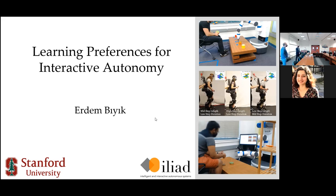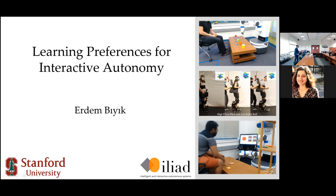He got his BS from the camp university in 2017, his MS from Stanford in 2019, and he's active with the faculty PhD study today. He will be talking on interactive autonomy for making robots learn interaction capability. Thank you for the kind introduction. I'm a fifth-year PhD student and today I'm going to talk about how we learn preferences for interactive autonomy, which is especially useful in human-robot interaction and multi-agent systems.